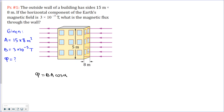Using the equation for magnetic flux, the wall is perpendicular to the magnetic field lines, so the angle between the normal of the wall and the magnetic field lines is 0°, which means cosine alpha equals 1. When the angle is 0° and the plane is perpendicular to the field, the magnetic flux through the surface is maximum.